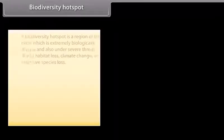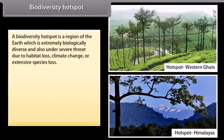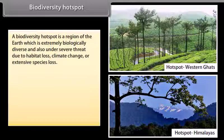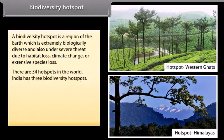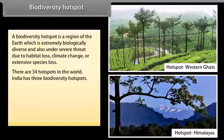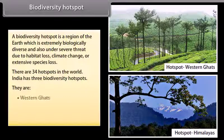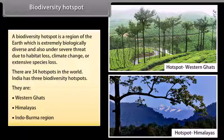Biodiversity hotspot. A biodiversity hotspot is a region of the earth which is extremely biologically diverse and also under severe threat due to habitat loss, climate change, or extensive species loss. There are 34 hotspots in the world. India has three biodiversity hotspots: the Western Ghats, the Himalayas, and the Indo-Burma region.